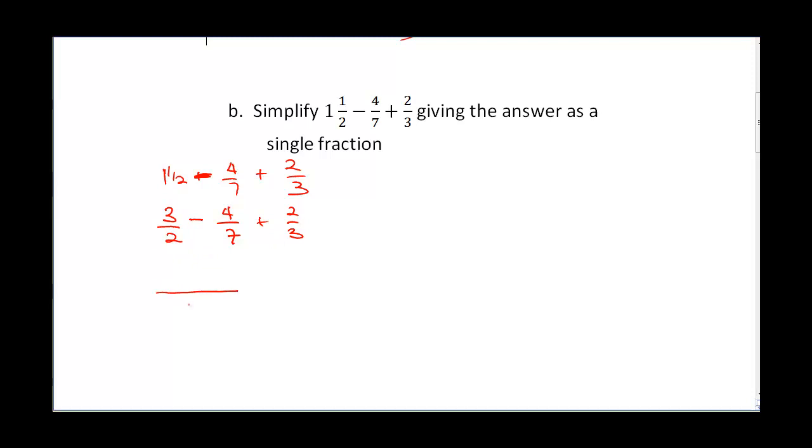Working on this, the LCM of 2 and 7 is going to be 14. 14 divided by 2 gives 7, 7 times 3 is 21. Minus 14 divided by 7 is 2, 2 times 4 gives us 8. So we still have plus 2/3. 21 minus 8 is going to give us 13, that'll be 13/14 plus 2/3.